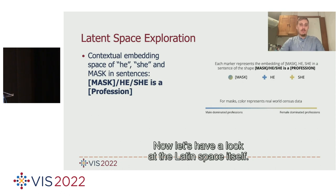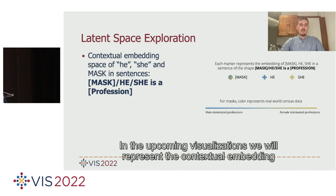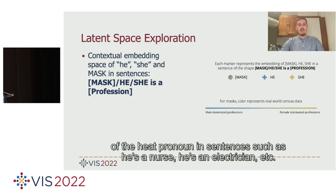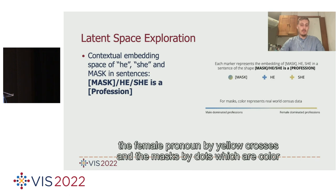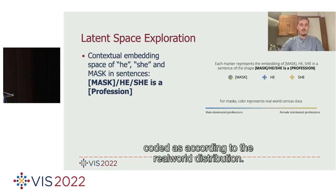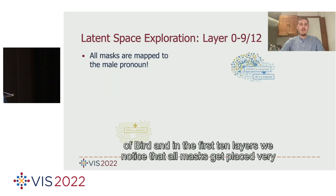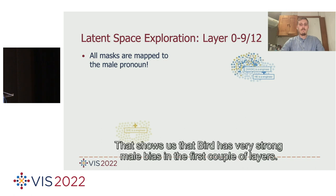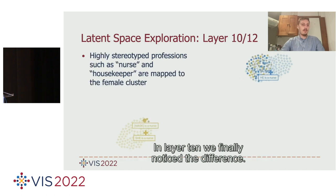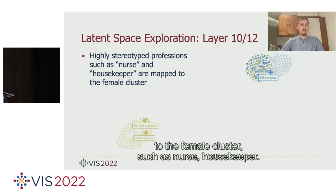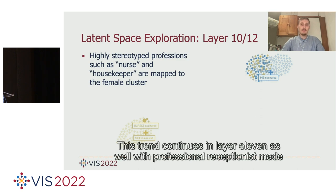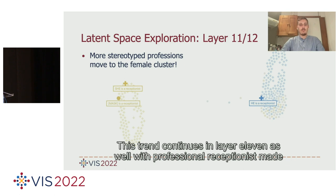Now let's look at the latent space itself. In the visualizations, we represent the contextual embedding of the 'he' pronoun in sentences like 'he's a nurse' or 'he's an electrician' by blue crosses, the female pronoun by yellow crosses, and the masks by dots color-coded according to real-world distribution. Looking at all 13 layers of BERT, in the first 10 layers all masks get placed very close to the 'he' pronoun relative to 'she,' showing a very strong male bias. In layer 10, we notice a difference — a few stereotypically female professions like nurse and housekeeper are placed close to the female cluster. This trend continues in layer 11 with receptionist and mate.